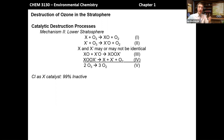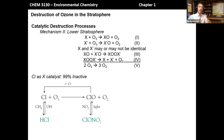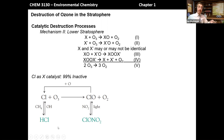Chlorine gets the most attention, primarily because it has the highest concentration of the two in the stratosphere. But it's important to note that 99% of the time, that chlorine is actually inactive — not in a form where it would destroy ozone. The two states involved in the catalytic cycle are atomic chlorine and chlorine monoxide, but most of the time chlorine is sequestered in an inactive form, either HCl (hydrochloric acid) or chlorine nitrate, ClONO2.